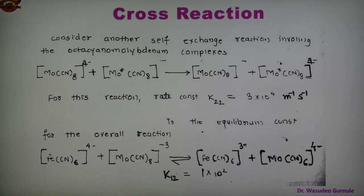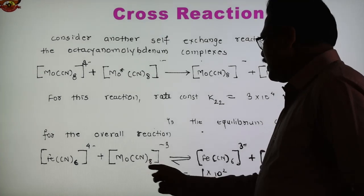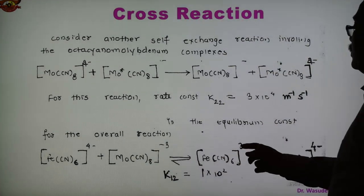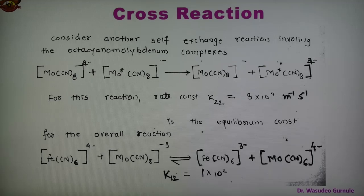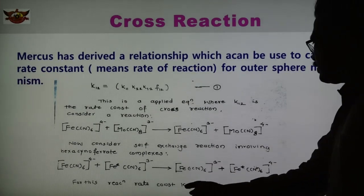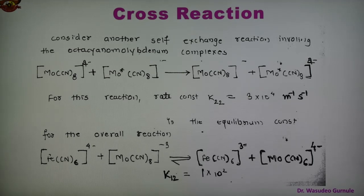Combining these two reactions: Fe(CN)6⁴⁻ + Mo(CN)8³⁻ gives Fe(CN)6³⁻ and Mo(CN)8⁴⁻, and K12 the rate constant equals 1×10². This is the overall reaction from the above two reactions. K12 means the rate constant combining reaction 1 and reaction 2, giving the cross reaction.